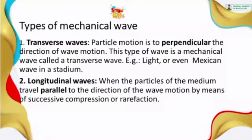Now, a transverse wave — the particle motion is perpendicular to the direction of the wave motion. That is, a transverse wave is when the motion of the particle is perpendicular to the direction of the wave motion. So this type of wave is a mechanical wave and it is called a transverse wave. Transverse wave is a type of mechanical wave — it is a wave that is produced when the particle...